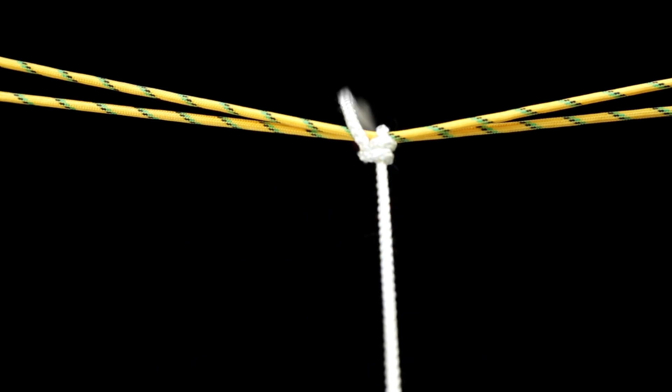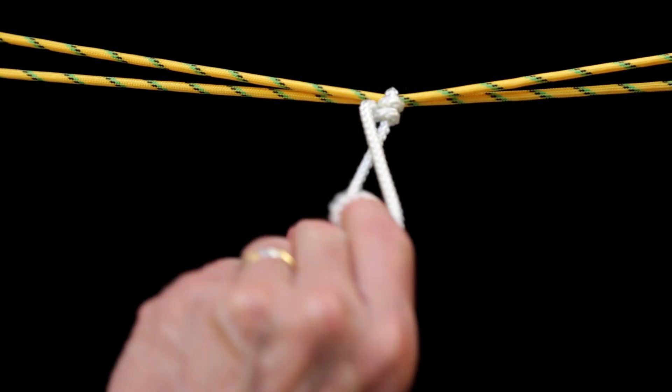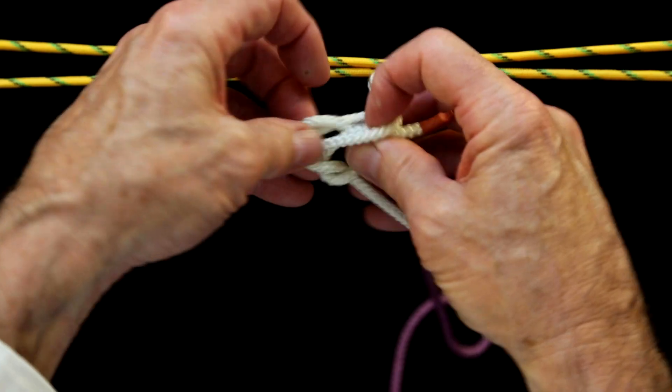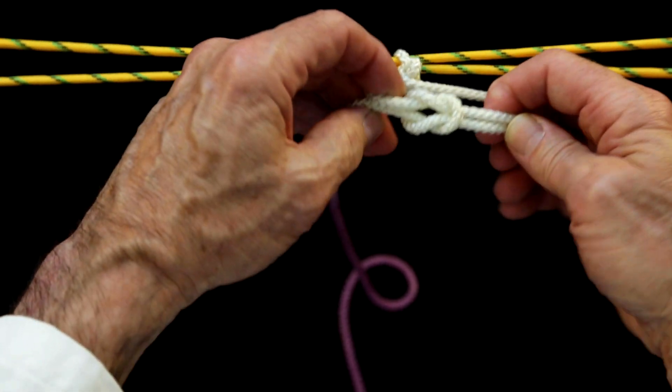For insurance, throw another loop in the opposite direction and tighten that. What does the third loop create? If you rearrange the last two loops, you find a classic locking square knot.